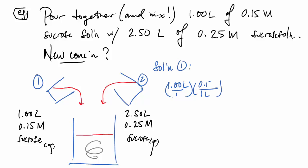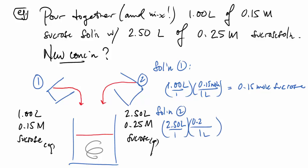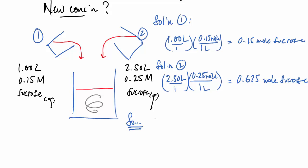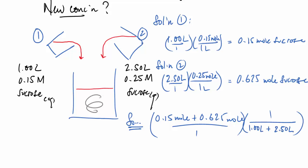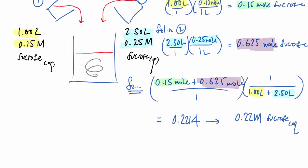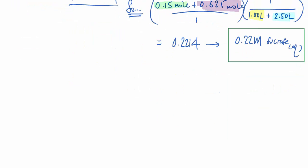From solution one: 1 liter × 0.15 mol/L = 0.15 mol of sucrose. From solution two: 2.5 liters × 0.25 mol/L = 0.625 mol of sucrose. Adding the moles and dividing by the total volume of 3.5 liters, we get 0.22 molar sucrose — no surprise, it falls between the two original concentrations.